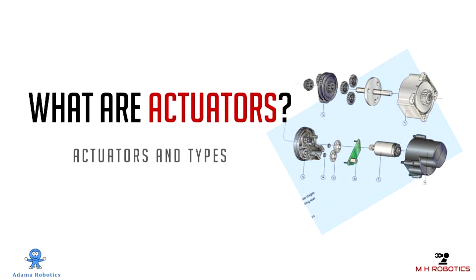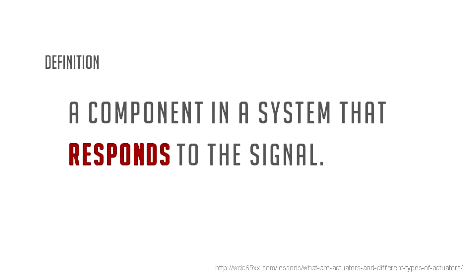In this video we are going to learn about what are actuators and their types. The definition of actuators is a component in a system that responds to the signal given to it.